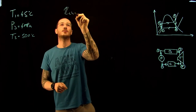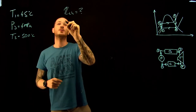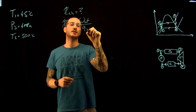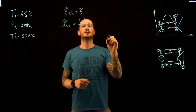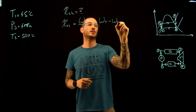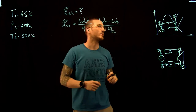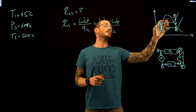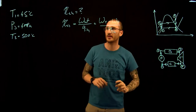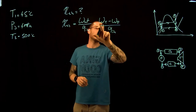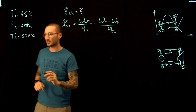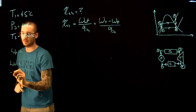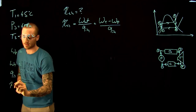The thermal efficiency is equal to the net work divided by Q_in. The net work is the work of the turbine minus the work of the pump, divided by Q_in. The work of the turbine is from point three to four, the work of the pump is from point one to two, and Q_in is from point two to three. We need the work of the turbine, work of the pump, and Q_in to solve for thermal efficiency.